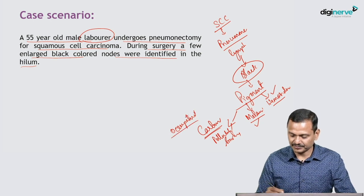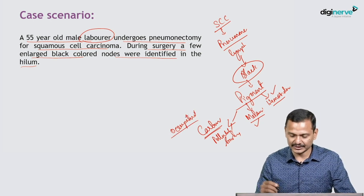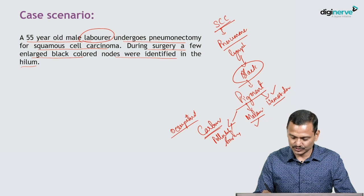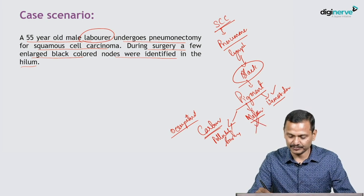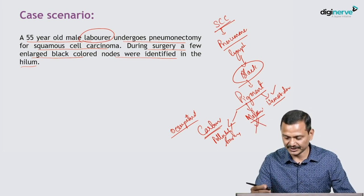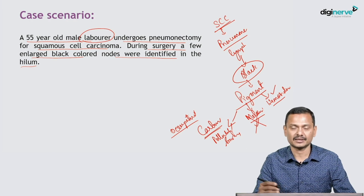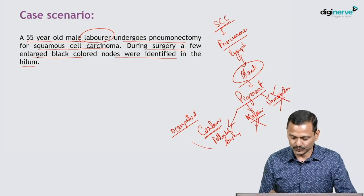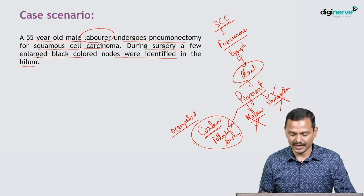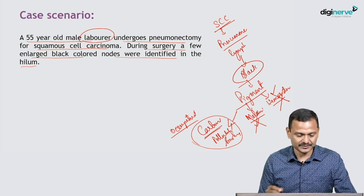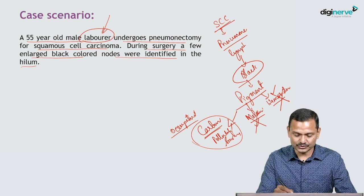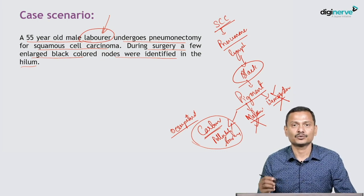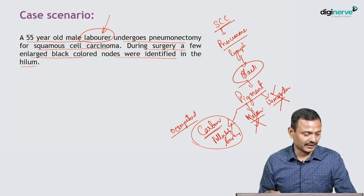There are three pigments — which one fits most likely? The patient is SCC, so melanoma is out. There is no history of any hemorrhage or anything like that happening in the lung, so hemosiderin is out. What we are left with is the most common cause, that is anthracosis, and as the patient is a laborer, it fits the clinical scenario. So this pigmentation is most likely anthracosis.